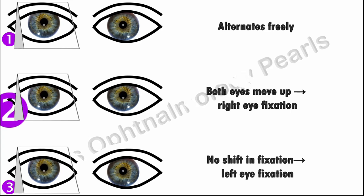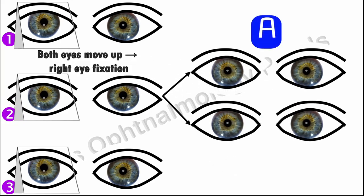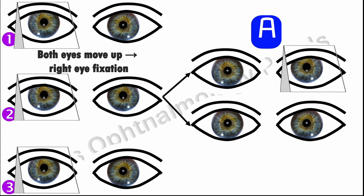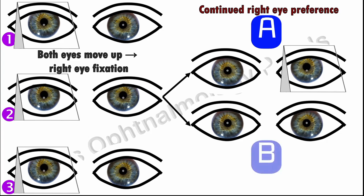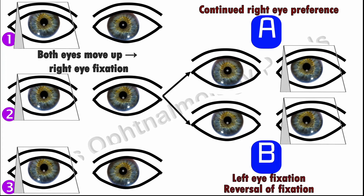In the scenario where the right eye was fixing, the prism is now placed in front of the left eye, and one of two things will happen. Position A: there is no shift in fixation, which means the right eye is continuing to fix — this confirms the right eye preference. Position B: both eyes will shift up, indicating left eye fixation; that is, there is a reversal of fixation with the prism over the left eye. A reversal of fixation indicates no fixation preference. In position A, where right eye fixation is confirmed, the second part of the test is performed.